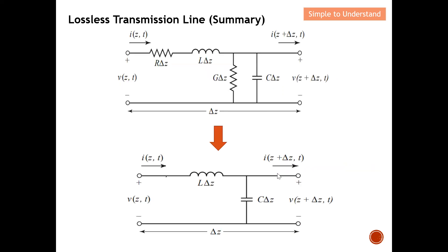I'm going to do a quick summary on the lossless transmission line. Earlier I mentioned the equivalent circuit diagram model for the transmission line, which includes R and G terms. Once it's lossless, R becomes zero and G becomes zero, so the resistor and conductance disappear. The outcome is that the equivalent circuit for a lossless transmission line consists simply of a series inductor L and a shunt capacitor C — and this repeats on and on down the line without any resistor or conductance.